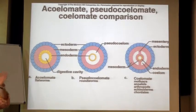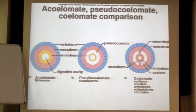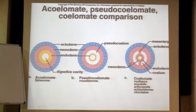Do you understand the three layers — ectoderm, mesoderm, endoderm? You can see the ectoderm is blue in colour, mesoderm is pink in colour, and endoderm is yellow in colour.